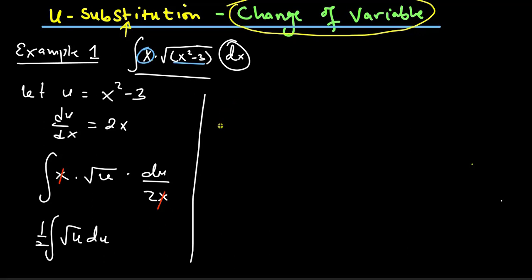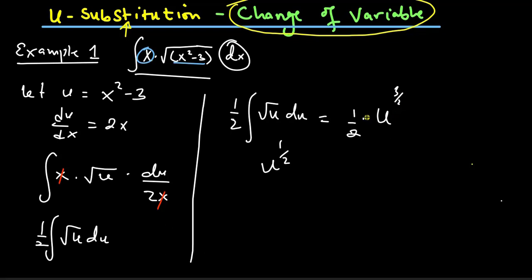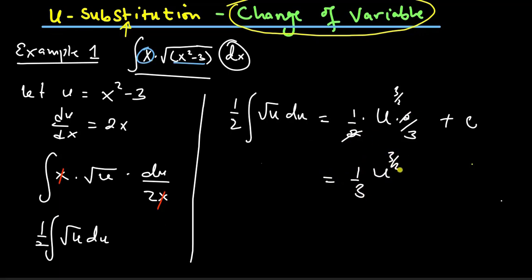I now have the integral of square root of u divided by 2, or I can write half here with respect to u. So the integral of half times square root of u du — square root of u is the same as u to the power half. If I increase the power by 1, I'll have 3 over 2. Dividing by 3 over 2 gives 2 over 3. So I have a third times u to the power 3 over 2 plus c. Substituting back, the final answer is one third times x squared minus 3 to the power 3 over 2 plus c.